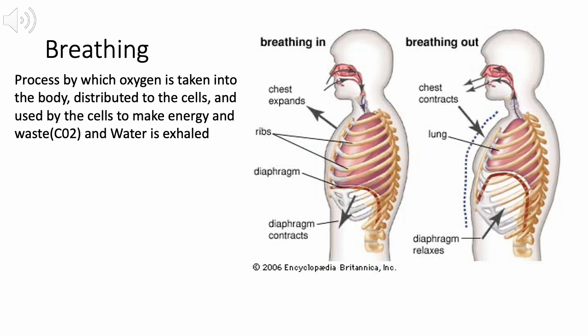Step 2: The brain sends a message to your body. It tells your ribcage to expand and your diaphragm to relax and flatten out. This causes the pressure within your lungs to decrease below atmospheric pressure, at which point air enters your lungs. This process occurs 10 to 12 times per minute in a healthy human.